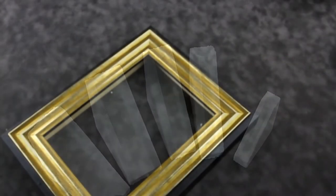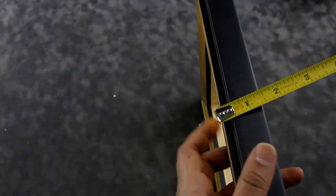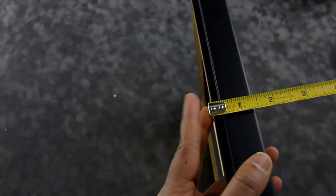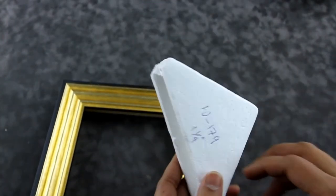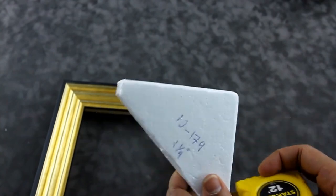Unsure about the protector size? Measure the depth of the frame and pick the corner protector corresponding to the frame depth. For example, for a one and one-fourth inch depth frame, you'll need one and one-fourth inch corner protectors.